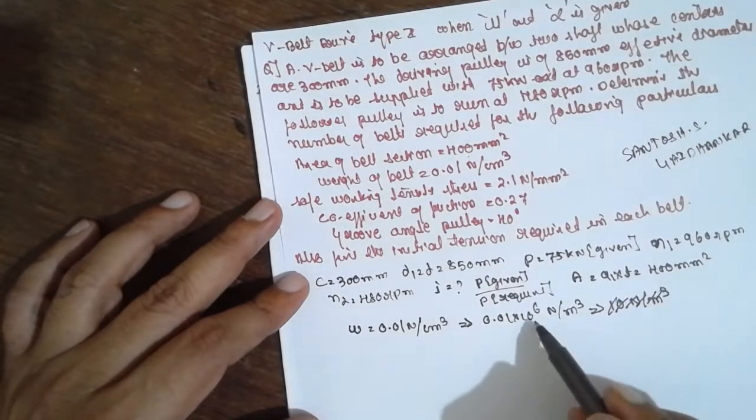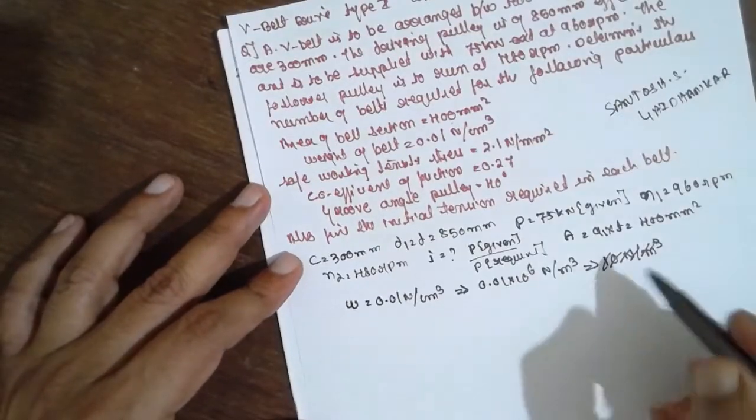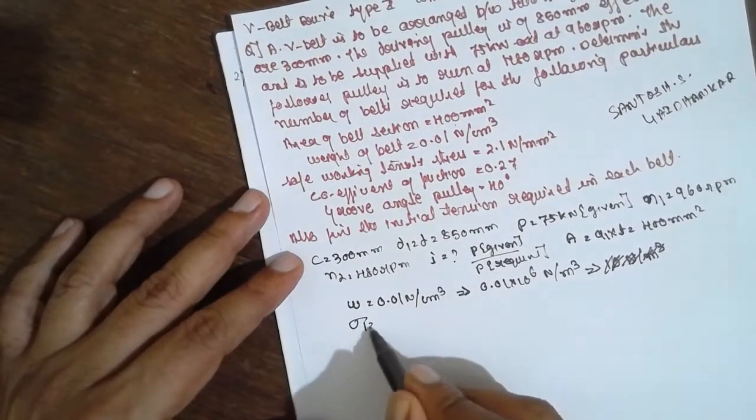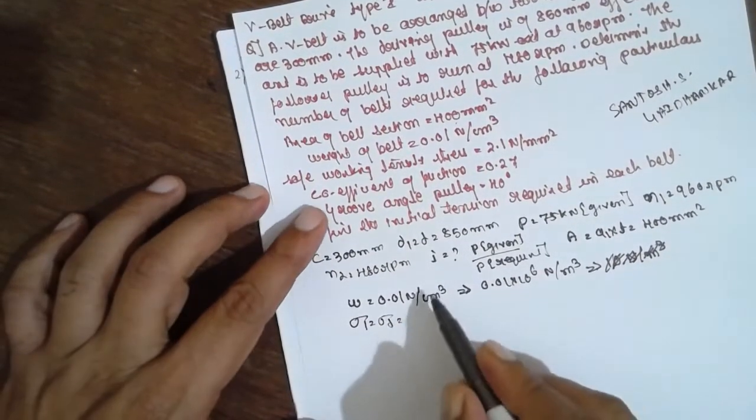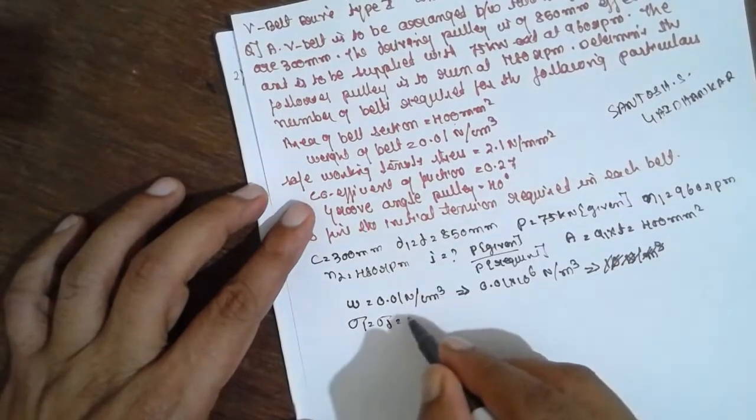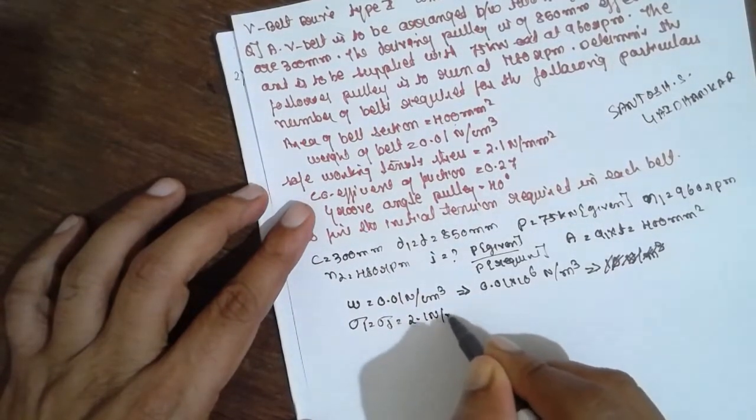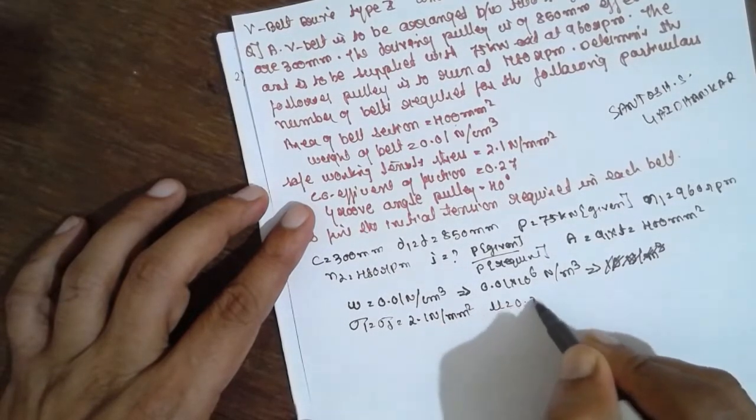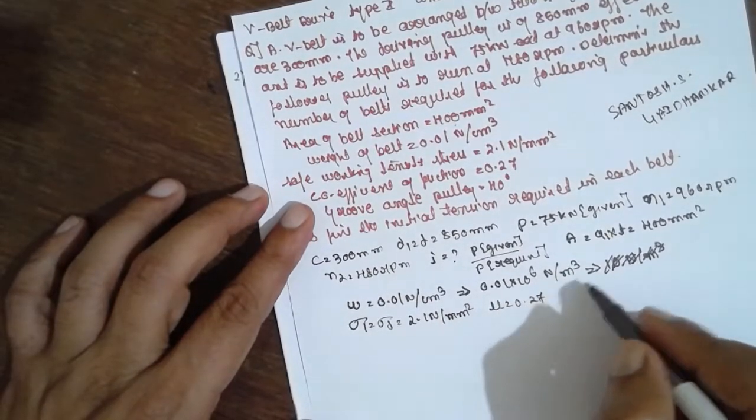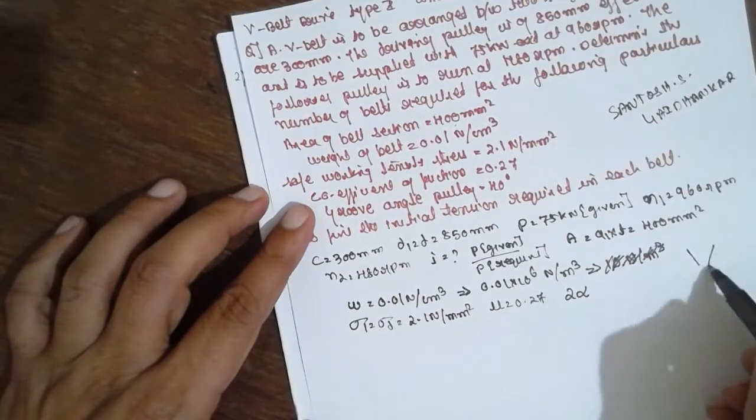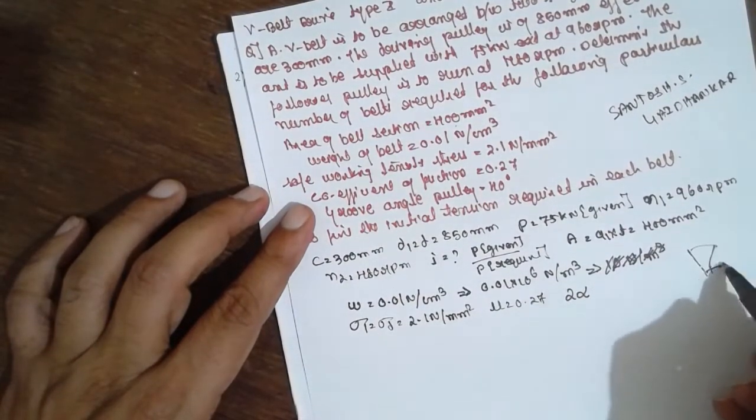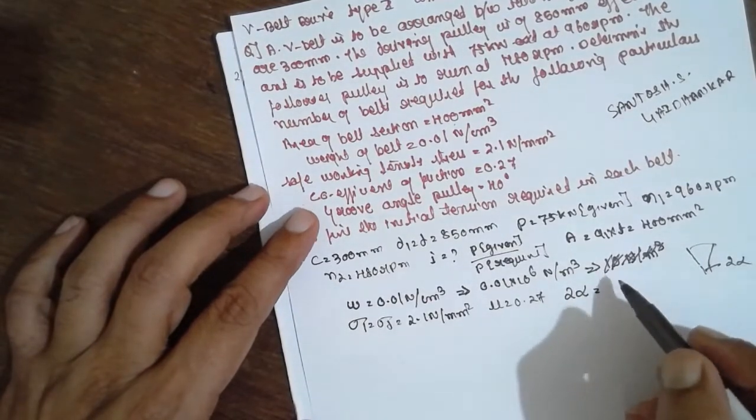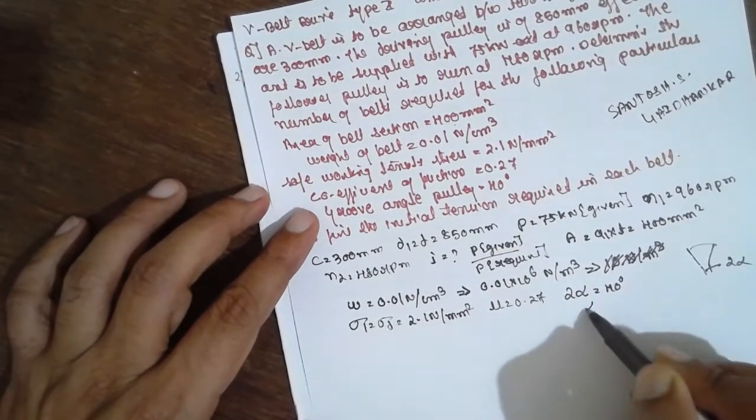Next, sigma 1 and sigma d is given. Sigma 1 is 2.1 N/mm². Next, mu is given, 0.27. And 2 alpha, it is a V-belt drive, the angle will be 2 alpha here. 2 alpha is nothing but how much they have given, it's 40°, therefore alpha will be 20°.